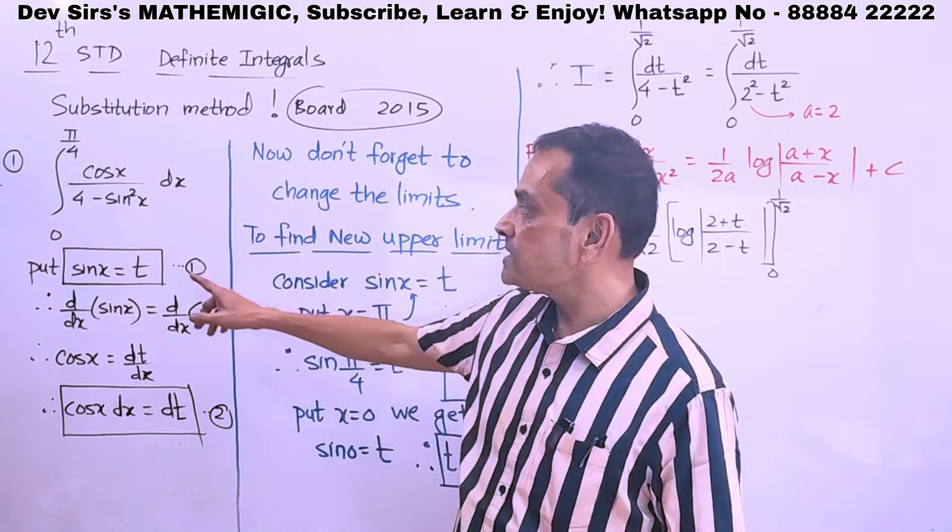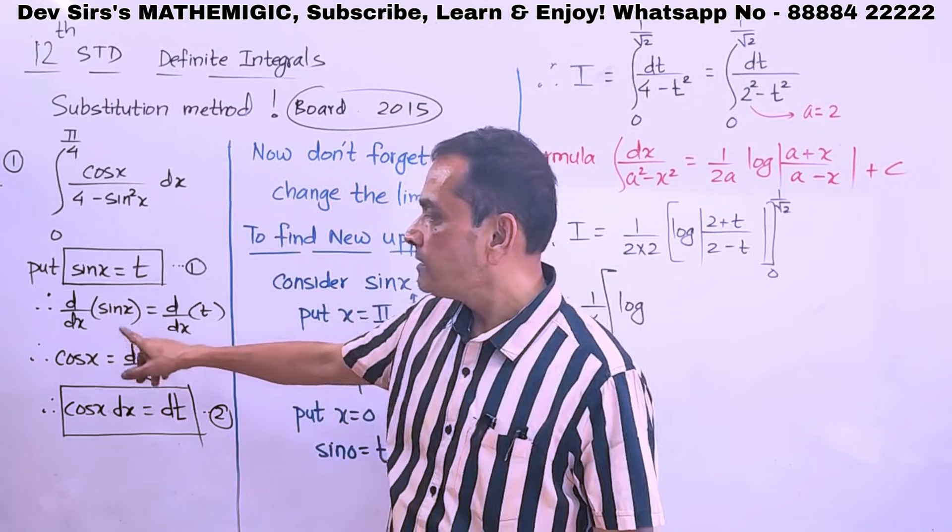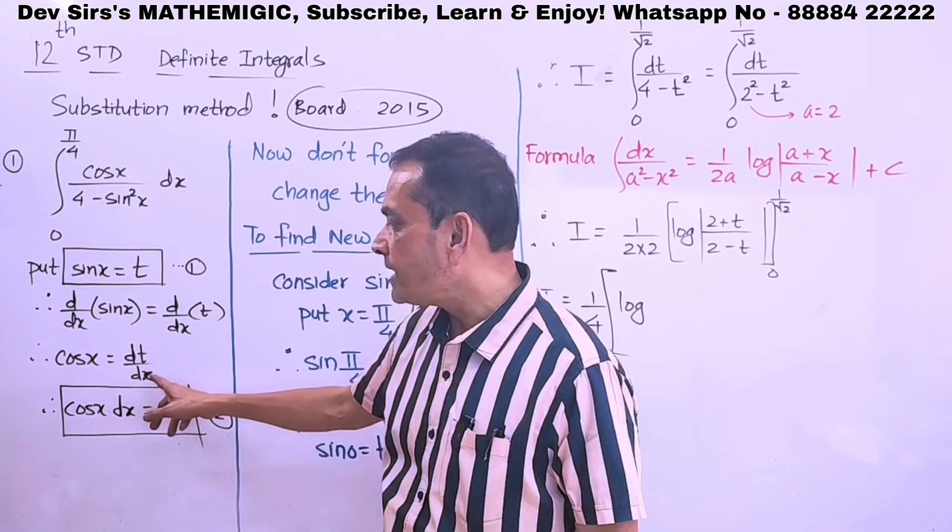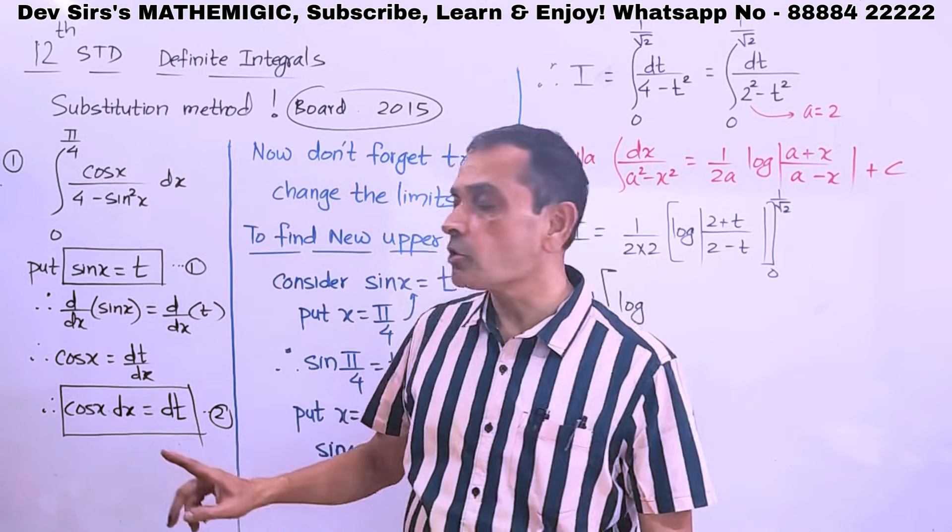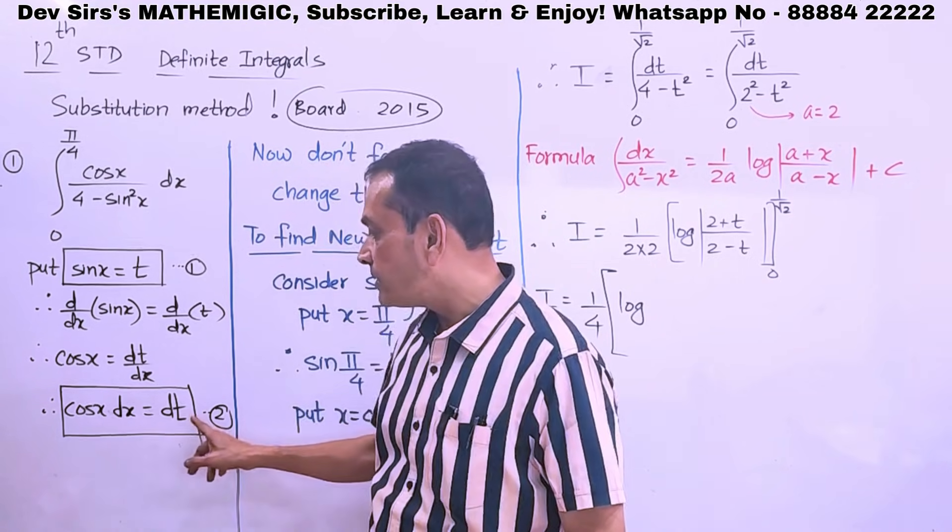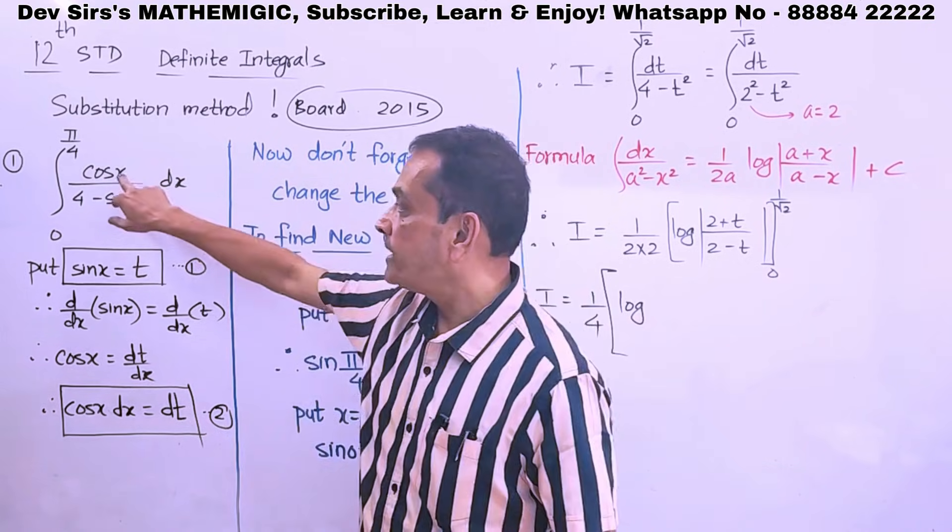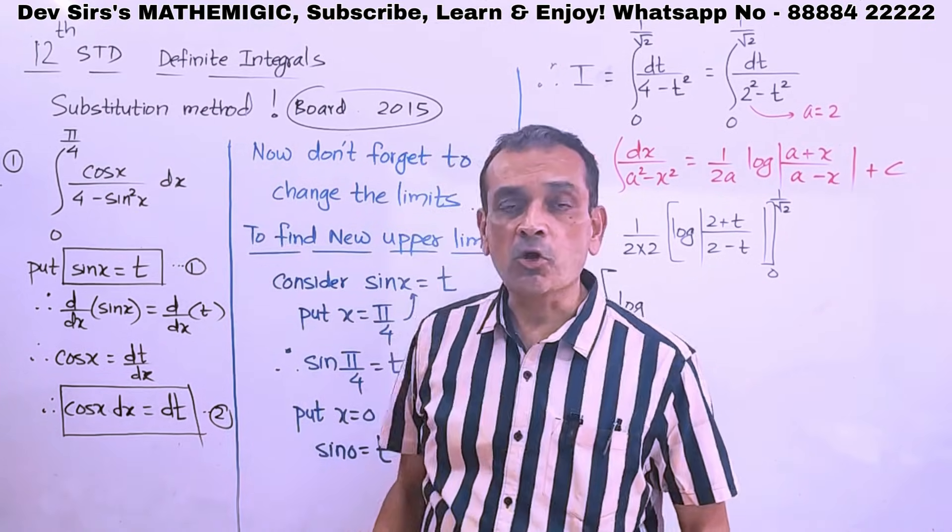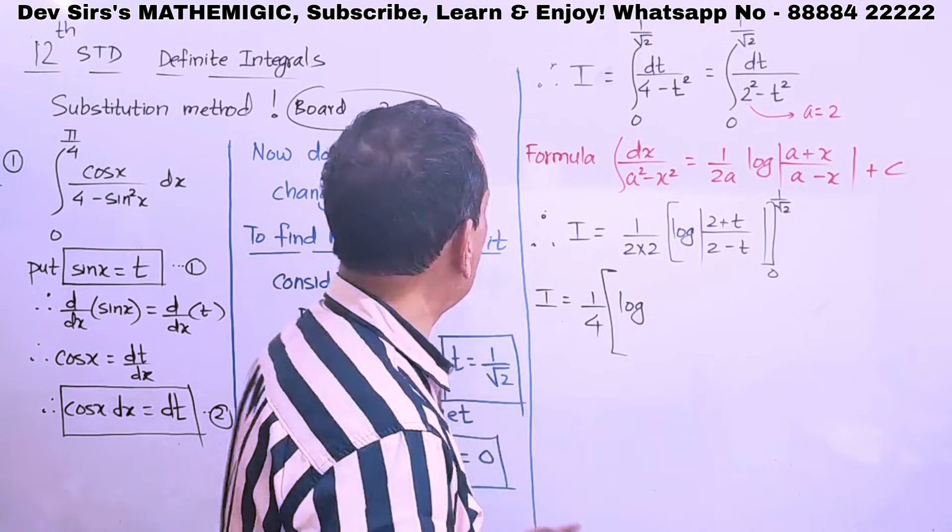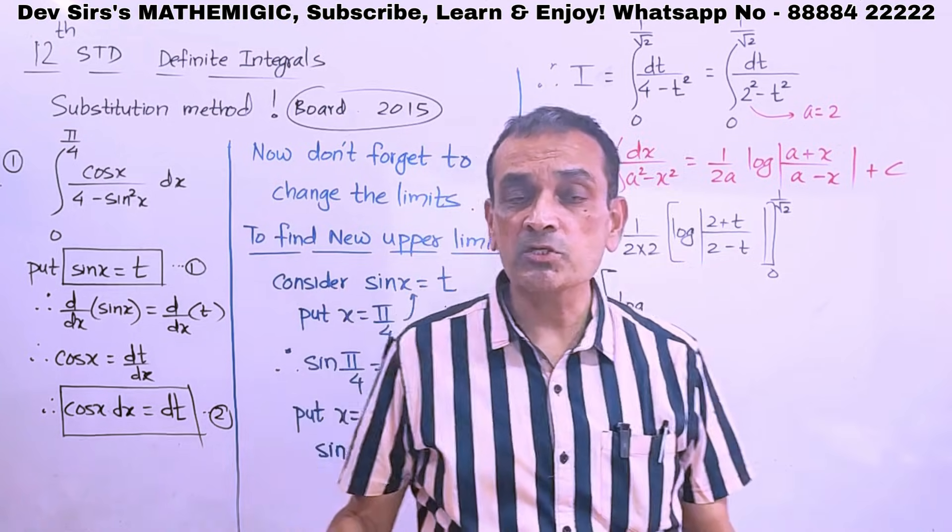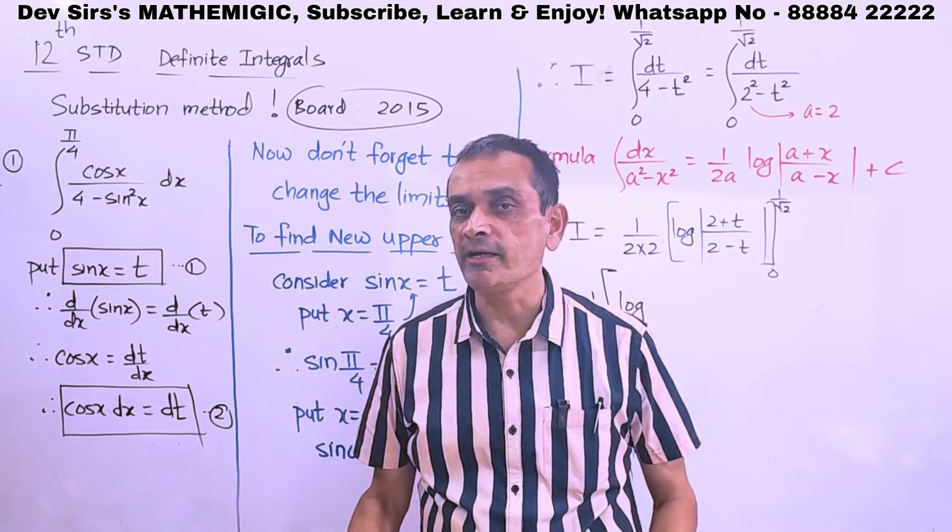So, our substitution is sin x equal to t, taking derivative on both sides, cos x is equal to dt by dx. Then don't forget to cross multiply, cos x dx equal to dt and check whether cos x dx is present over there. Yes, it is here cos x dx. So, for cos x dx just say dt. Simple. That is what we do in indefinite integration.